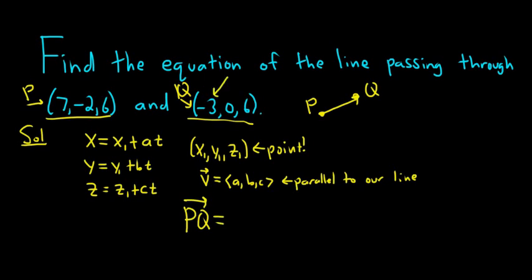So negative 3 and then minus 7. Terminal minus initial. Q is the terminal, P is the initial. And we could have done it the other way. It doesn't matter. 0 minus negative 2. And the last one being 6 minus 6. This ends up being negative 10, positive 2, and 0.